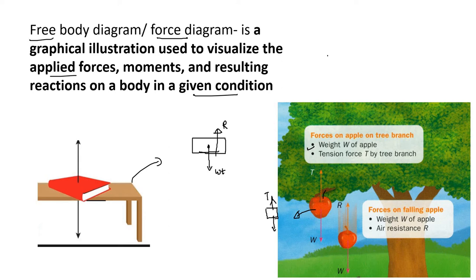Remember, weight will always act in the downward direction. Now if the apple is plucked and it is in the air, there is no tension. If I want to make the free body diagram for the apple falling through the air, there is air resistance acting against the movement. So the weight will be downward and the air resistance will be upward.